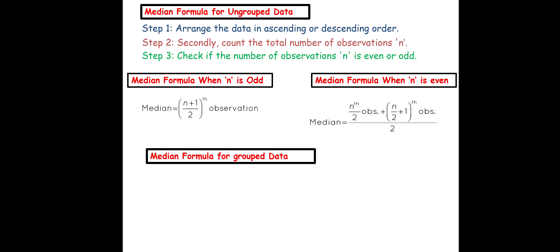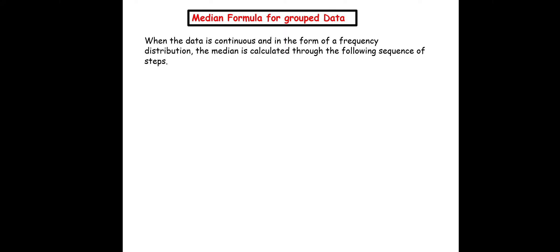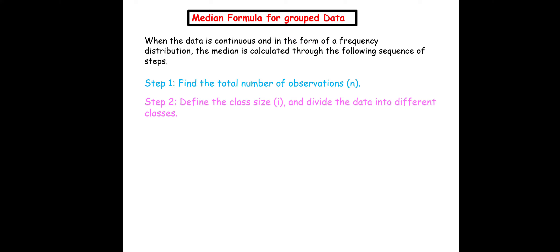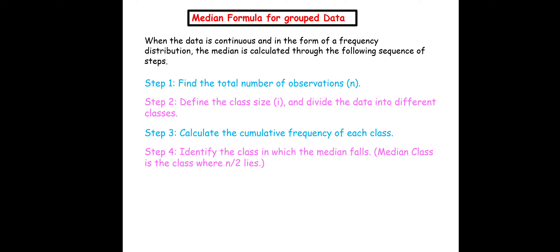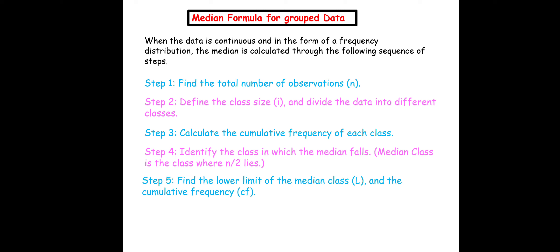There is another formula for grouped data. When the data is continuous and in the form of a frequency distribution, the median is calculated through the following steps: Step 1 — find total observations N. Step 2 — define class size i. Step 3 — calculate cumulative frequency. Step 4 — identify the median class where N/2 lies. Step 5 — find the lower limit L and cumulative frequency CF. Step 6 — apply the formula: Median = L + [(N/2 − CF) / F] × i.